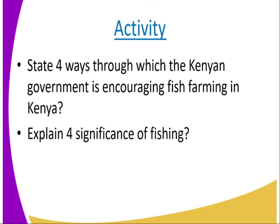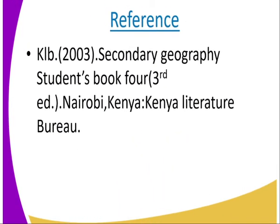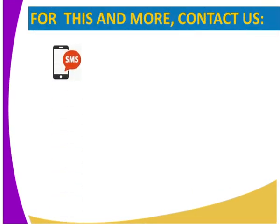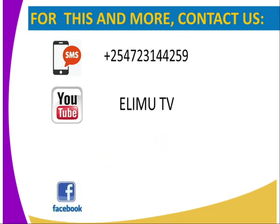Activity for today: State four ways through which the Kenyan government is encouraging fish farming in Kenya. Number two, explain four significances of fishing. For more information, you can visit the KLB 2003 secondary geography student book. Or you can get us through SMS, YouTube, or Facebook.